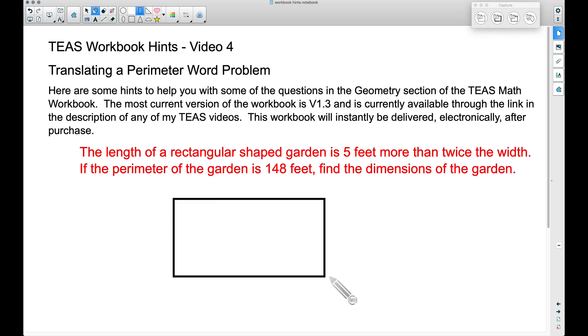We have a rectangular shaped garden with a length and a width. The length of this garden is 5 feet more than twice the width. We're translating this to an algebraic expression: 5 plus 2W means 5 more than twice the width.